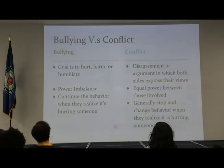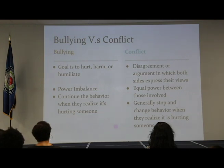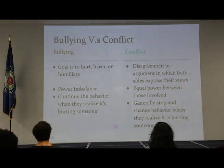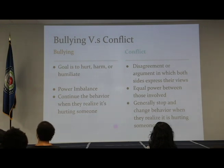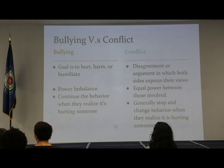Bullying versus conflict: with bullying, the goal is to hurt, control, or humiliate. Conflict is a disagreement or an argument in which both parties can express their views, and there is equal power between those involved. A bully will continue the behavior when they realize it's hurting someone. In conflict, people generally stop and change their behavior when they realize it's hurting somebody. Bullying is normally a power struggle — some people just like to be in control, and bullies tend to take advantage of people who are weak.